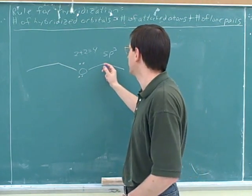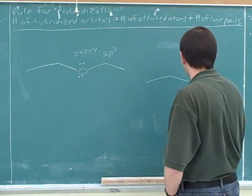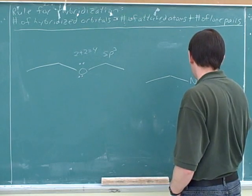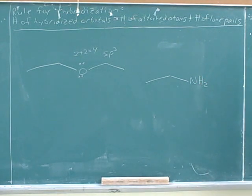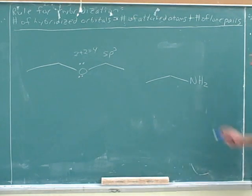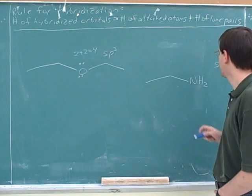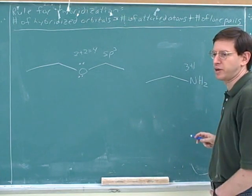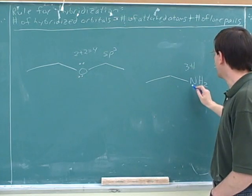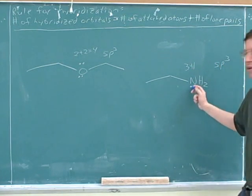What would be the hybridization of this carbon? Also SP3. Good. What's the hybridization of this nitrogen? SP3. How many lone pairs does it have? One. So there are three attached atoms and one lone pair — again SP3. You're just expected to know that a nitrogen with no formal charge has to have one lone pair.